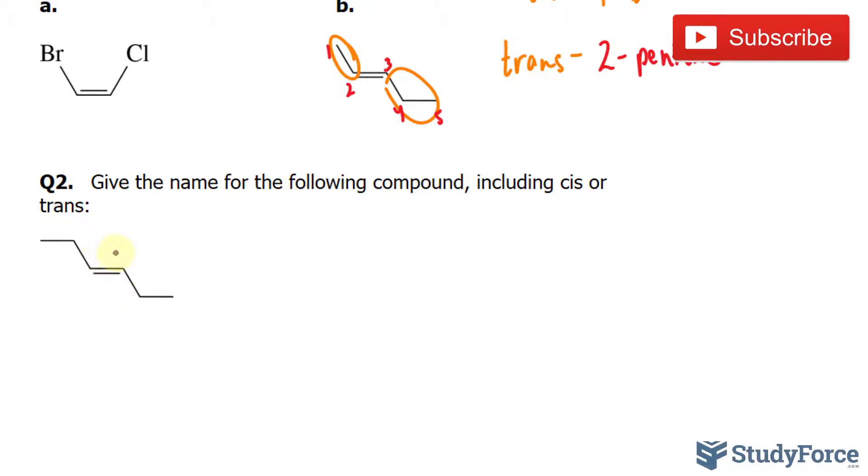So first, we have the double bond right in the middle, so it doesn't matter where we start from the left end or the right end of this molecule. And we have this alkyl group and this alkyl group attached. They're on opposite sides, so it's a trans molecule.